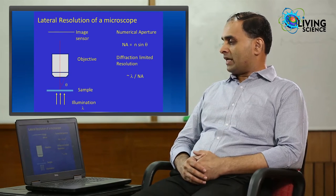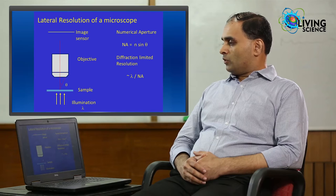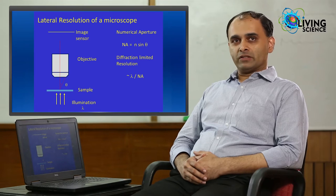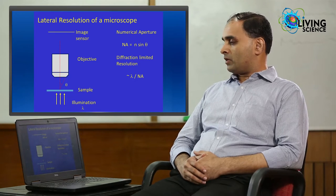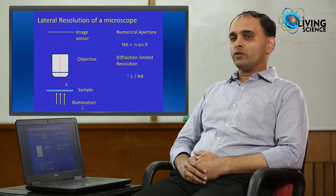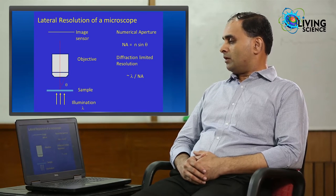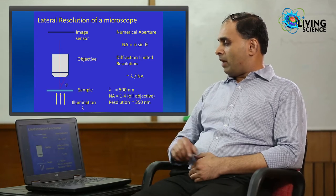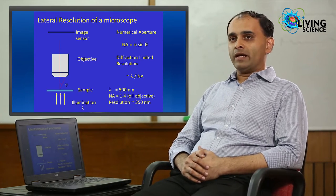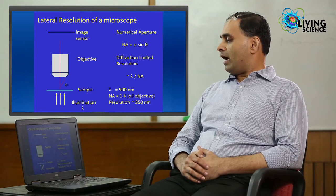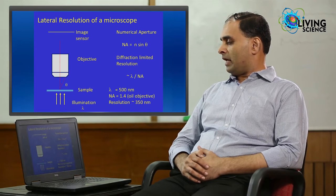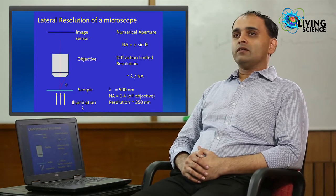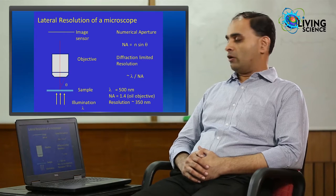As discussed in the previous lectures, the lateral resolution of a microscope depends on the wavelength lambda of illumination and the numerical aperture of the microscope objective used. The diffraction limit resolution is given by lambda divided by NA. So, for a microscope that uses visible light at lambda equal to 500 nanometers and one of the best possible NA of 1.4 for oil objectives, the resolution that you can obtain is about 350 nanometers.